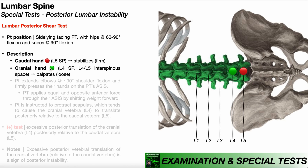This is the opposite of the anterior shear test. In the posterior shear test, the caudal hand is stabilizing and firm, while the cranial hand is loosely palpating for movement.